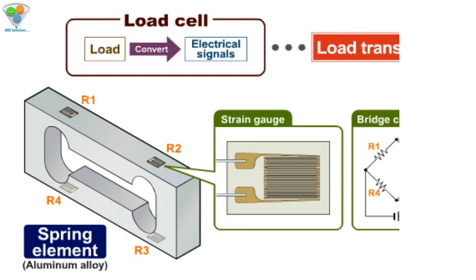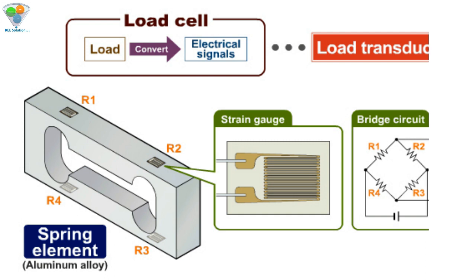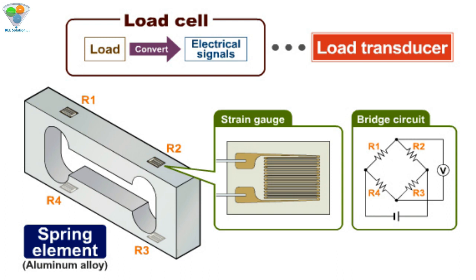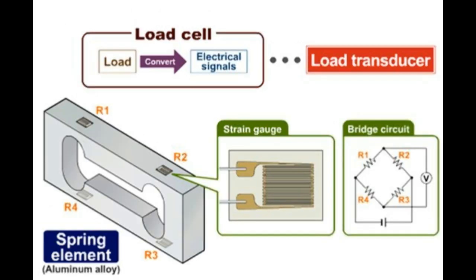We have taken one example here of a load cell. It has four resistances, or you can say four strain gauges. The pressure or force is applied on the strain gauge — compressed or depressed — and that change in resistance is used in the bridge circuit.